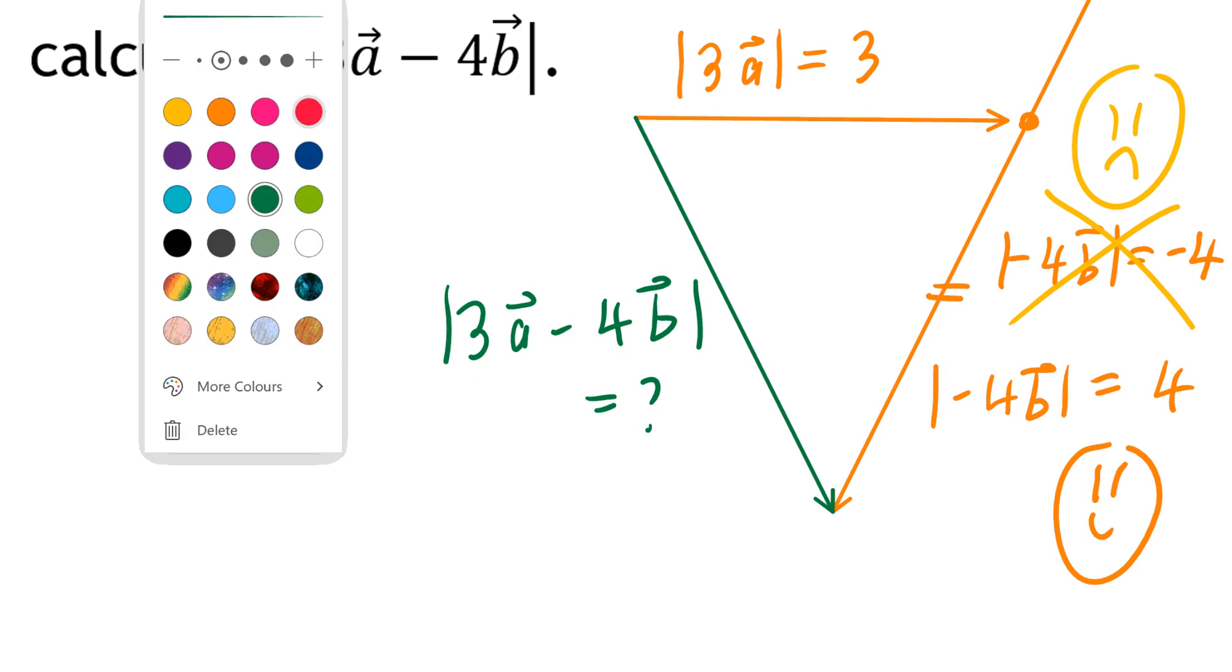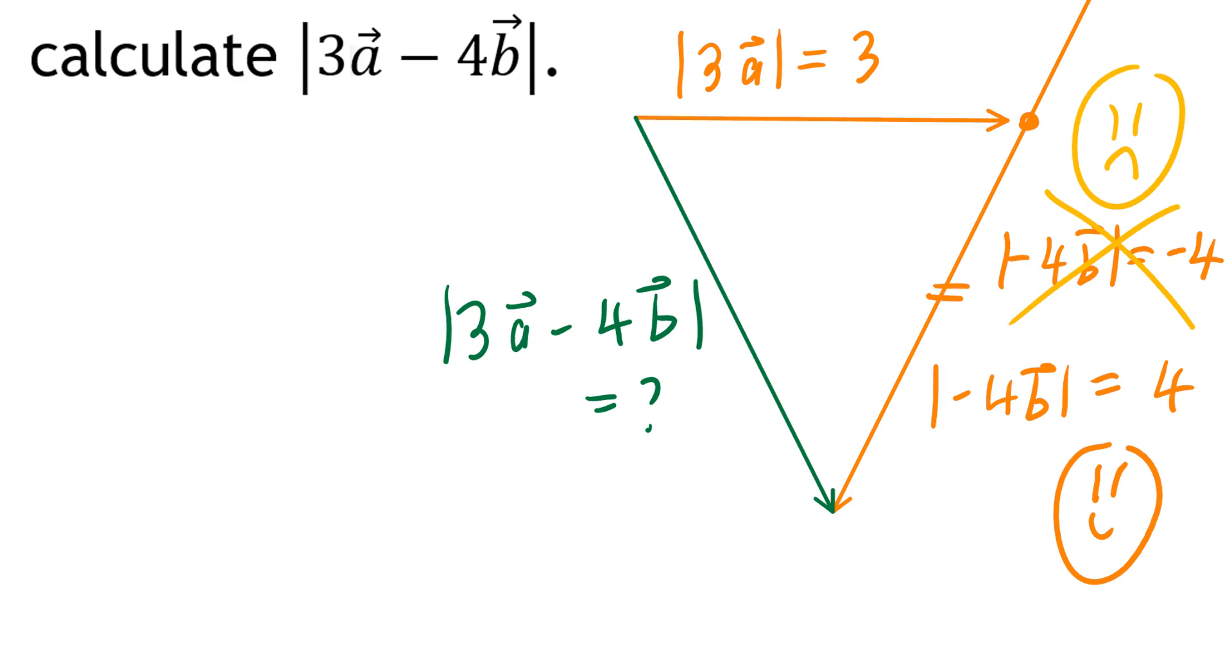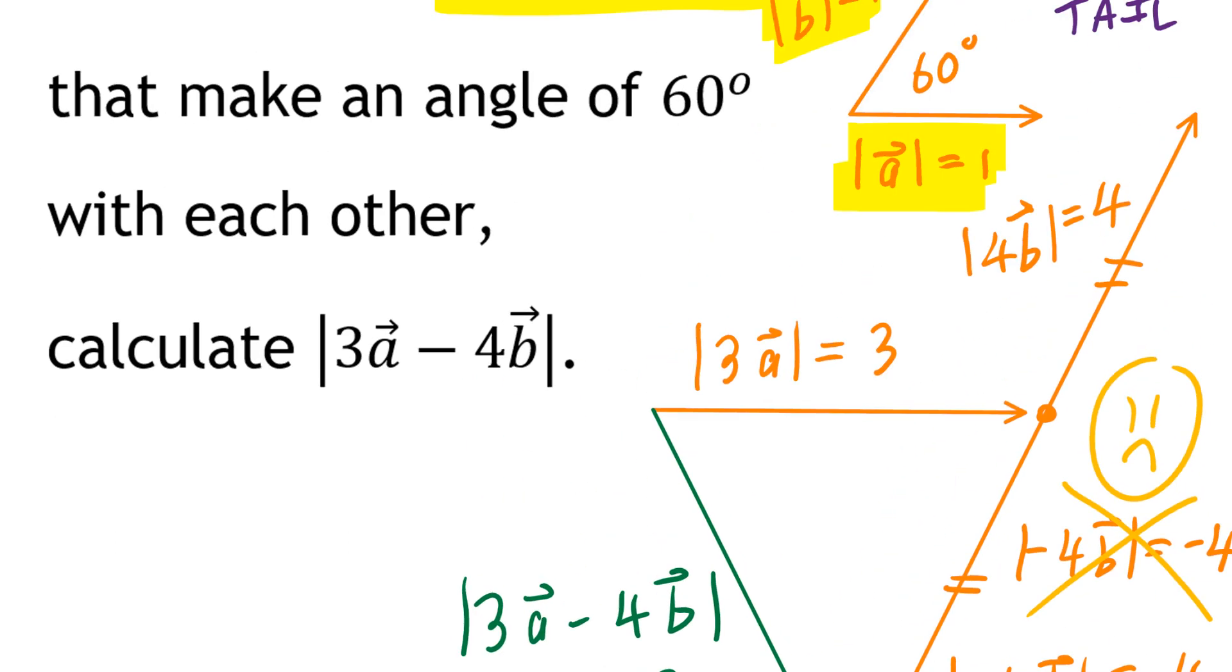Now if you go back and you look at the angle between these two vectors, we knew from the given that the angle between them was 60 degrees. So if you think about this, this angle would have been 180 minus 60, which is 120 degrees.